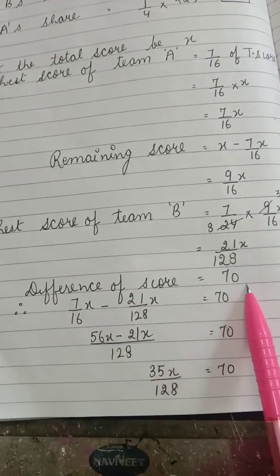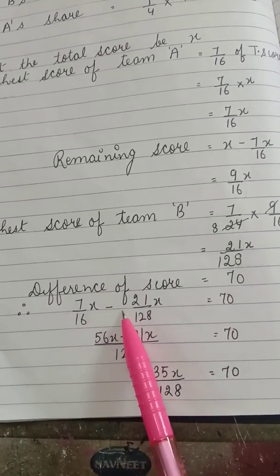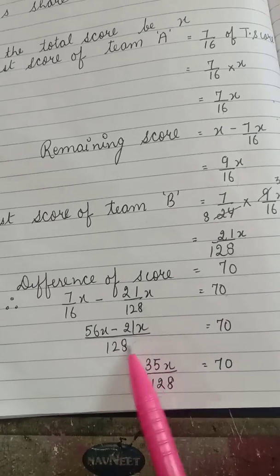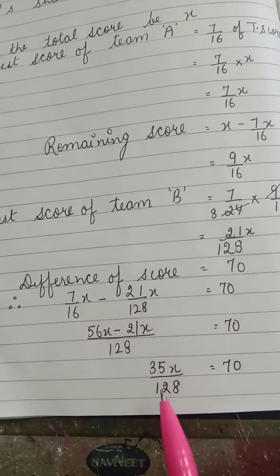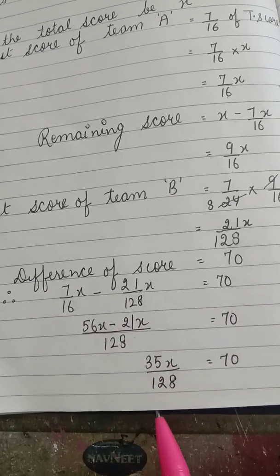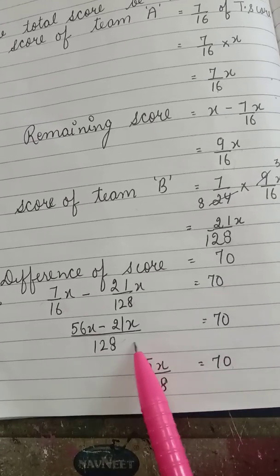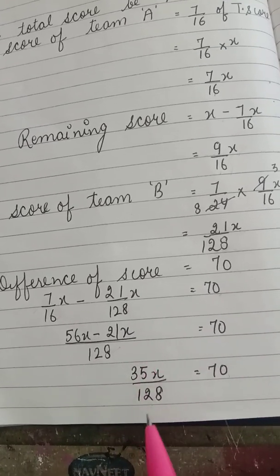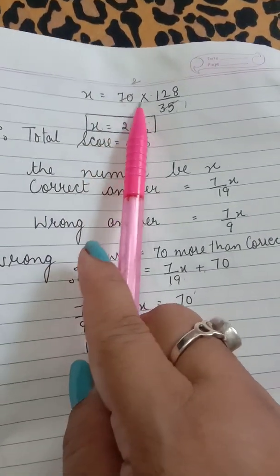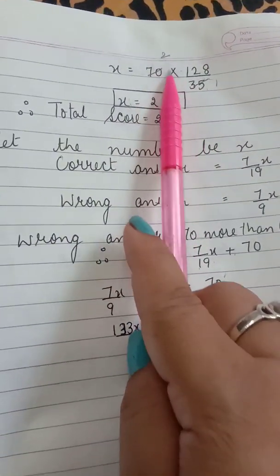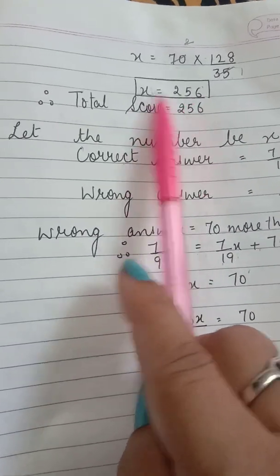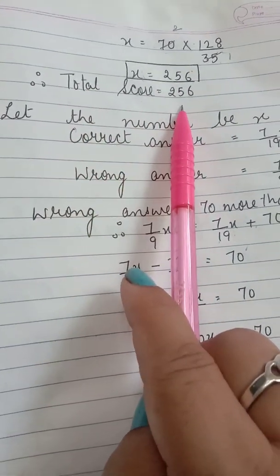Difference of the score is 70. So score of team A minus score of team B is 70. On finding LCM, it's 56 X minus 21 X, which is 35 upon 128 X, which is equal to 70. Now we'll keep X here and we'll take 35 upon 128 to the other side. So X is equal to 70 into 128 upon 35. On reducing, the value of X is 256, so therefore the total score is 256.